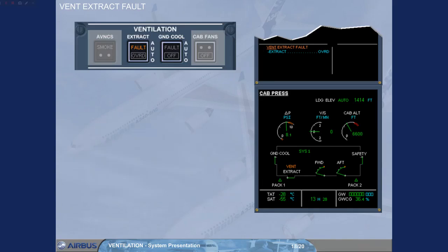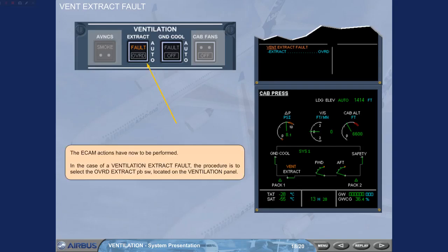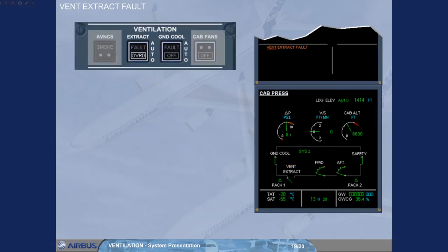The ECAM actions now have to be performed. In the case of a ventilation extract fault, the procedure is to select the override extract push button switch located on the ventilation panel. When you switch to override, the amber fault light in the extract push button switch goes off and is replaced by the white override light, and the blue action line on the engine warning display disappears.